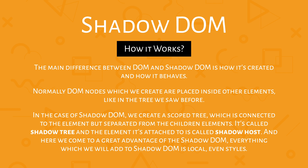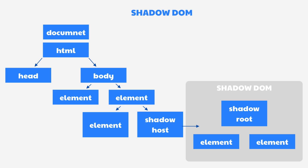Here we come to a great advantage of Shadow DOM — everything added to Shadow DOM is local, even styles. On the screen you can see a graphic representing how Shadow DOM works. You can see the normal DOM on the left, and one element of our normal DOM is the Shadow Host. This Shadow Host is like a copied part of the DOM which creates a separate DOM with a shadow root and some elements.